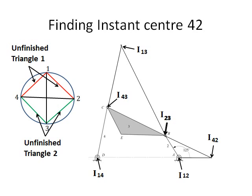We can see that body 3 rotates around I13, body 2 rotates around I12, and body 4 rotates around I14. At I43, the velocity between body 4 and 3 is the same. At I23, the velocity between body 2 and 3 is the same. At I42, the velocity between body 4 and 2 is the same. We use the idea of a theoretical extension of the bodies to understand how the velocities may be the same at these positions. We have now found all the instant centers and can concentrate on the next part of the question.